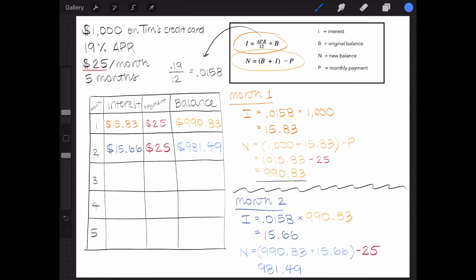Now it's your turn. Go ahead and solve for the third month's interest. The monthly interest rate of 0.0158 times $981.49 equals $15.51. High five to you if you got it.